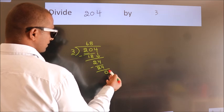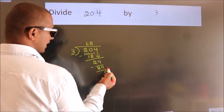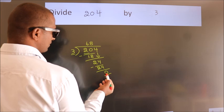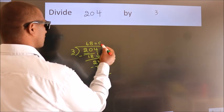After this, there are no more numbers to bring down. We got a remainder of 0, so this is our quotient.